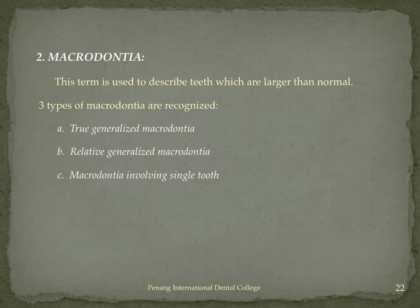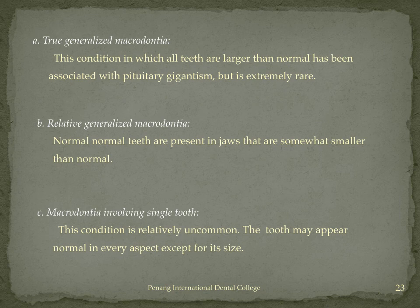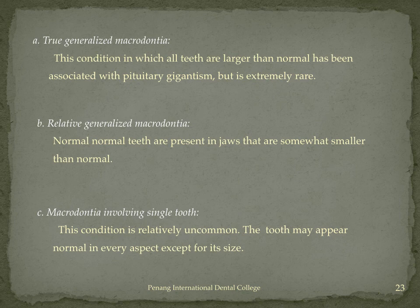Similarly, macrodontia has three types: true generalized, relative generalized, and macrodontia involving a single tooth. True generalized macrodontia, where all teeth are genuinely large, is attributed to hormonal disturbances like pituitary gigantism and is extremely rare. Relative generalized macrodontia is where teeth are not actually big but appear large due to a smaller jaw size. Macrodontia involving a single tooth is localized to one tooth and is relatively uncommon.